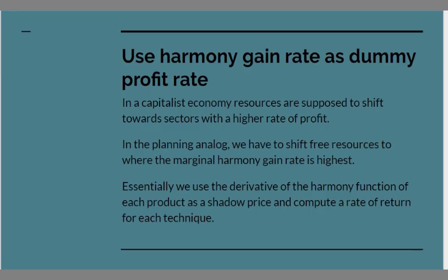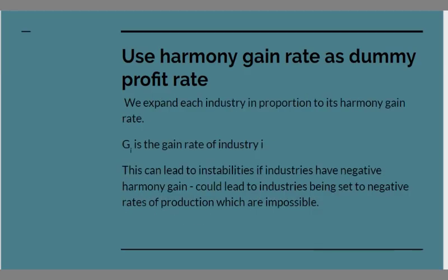Well in a capitalist economy the rate of profit is supposed to act as an indicator to shift resources towards sectors where they'll be more useful and produce a higher rate of return. In the planning analogue what we want to do is to shift resources to the branches of production where the marginal harmony gain is greatest. Essentially we use the derivative of the harmony function for each product as a shadow price and compute a rate of return for each technique. And we expand each industry in proportion to its harmony gain rate. If we assume G_i is the gain rate of industry i in what I do and what follows.